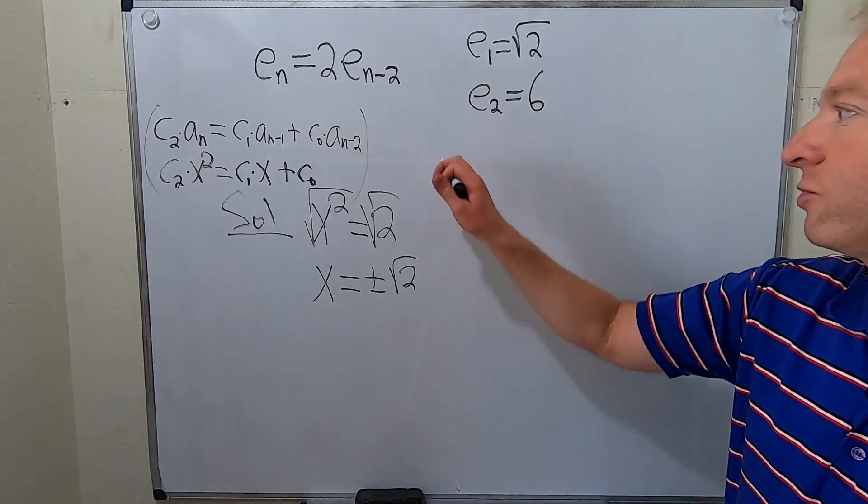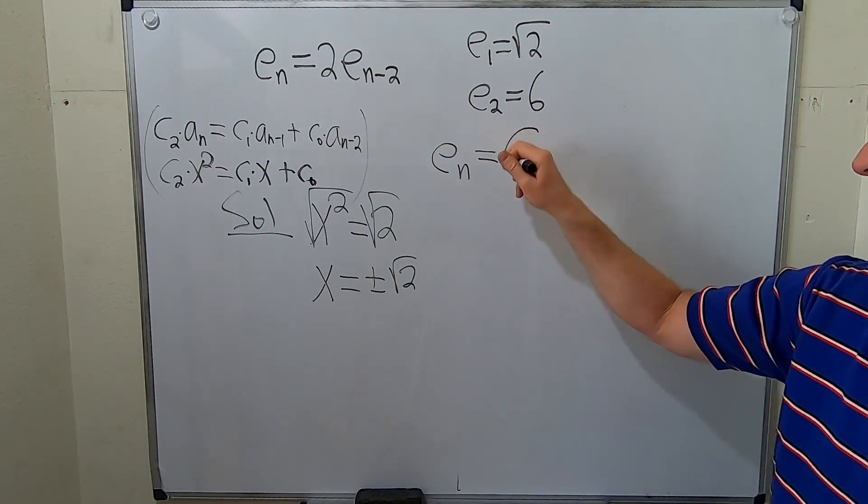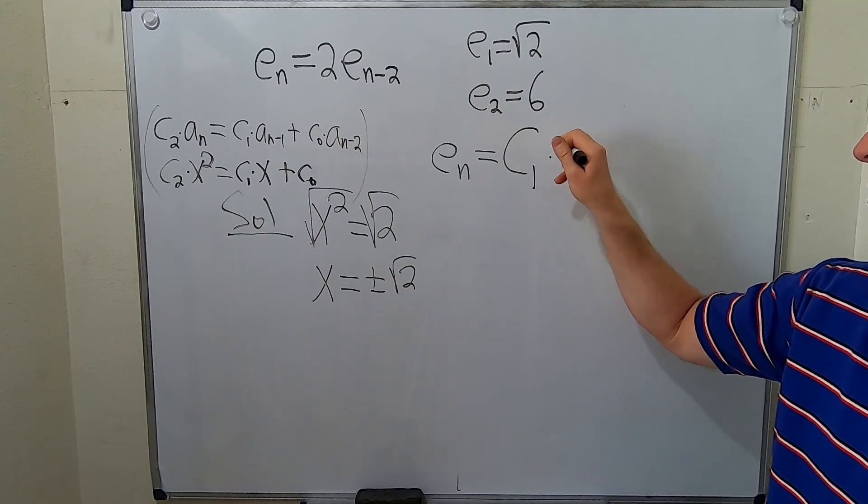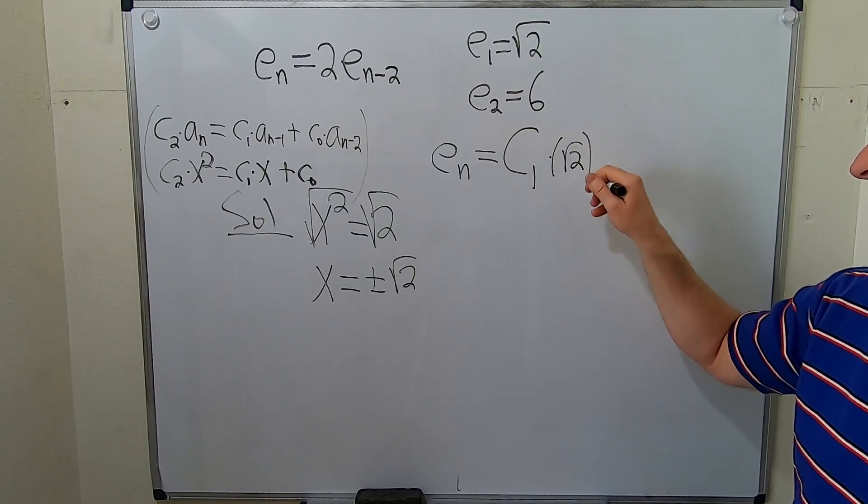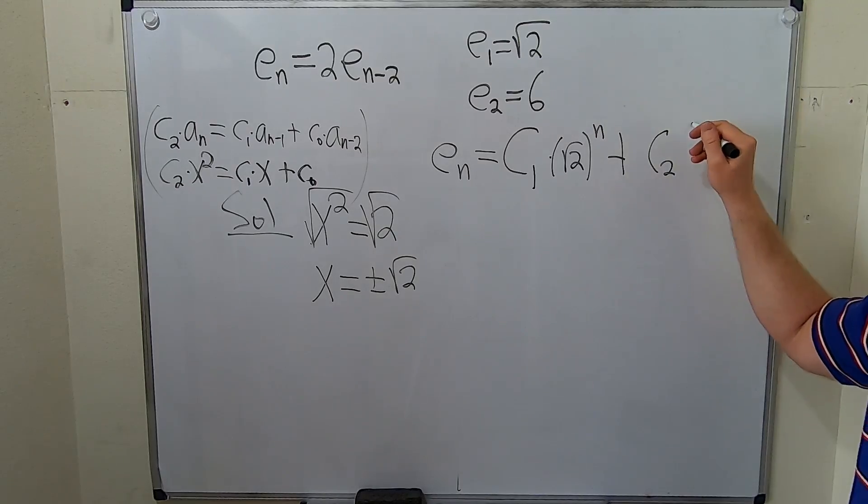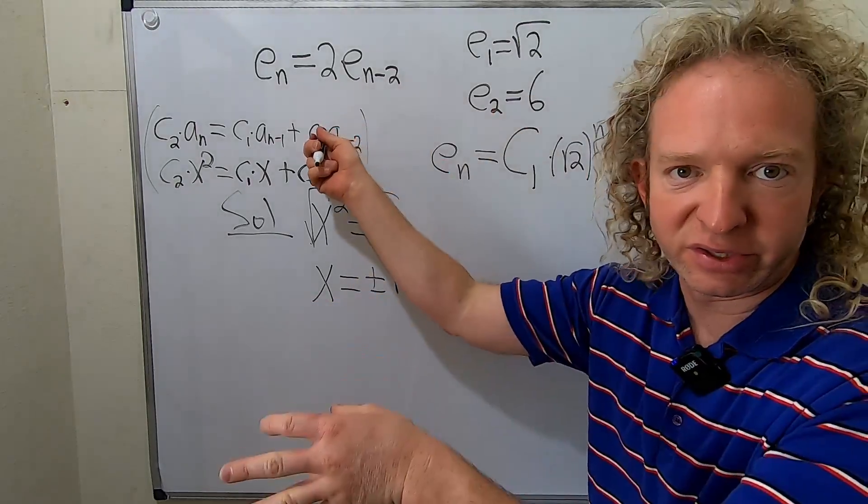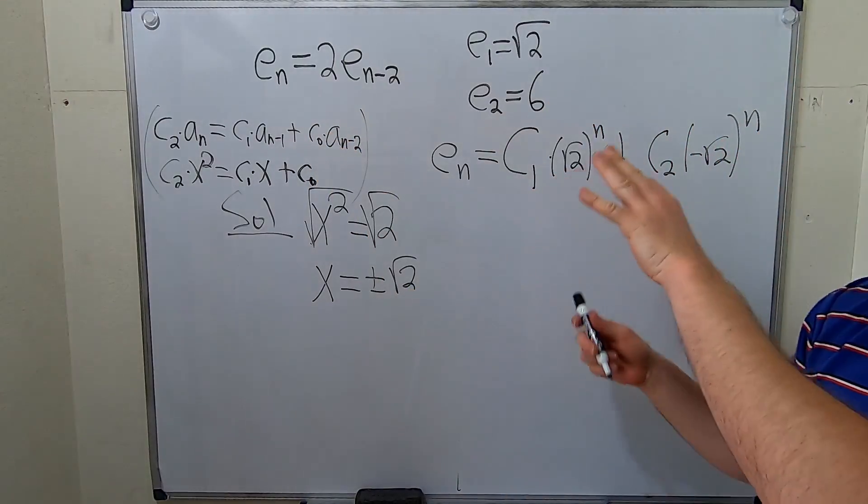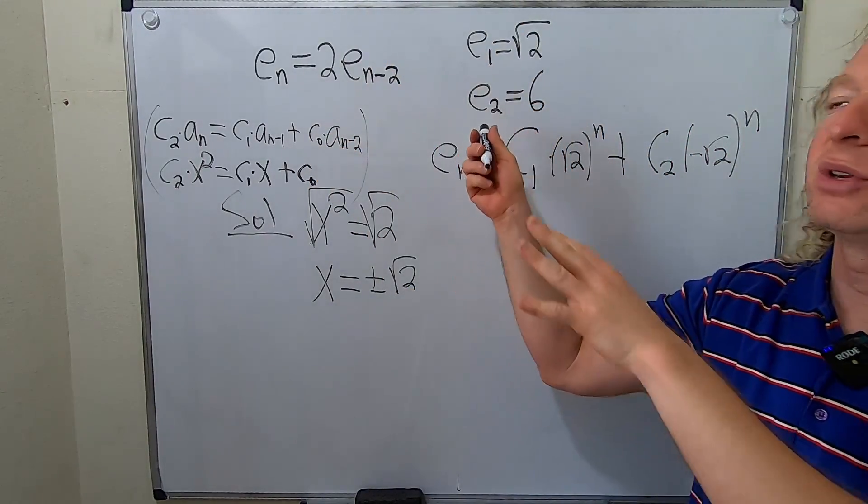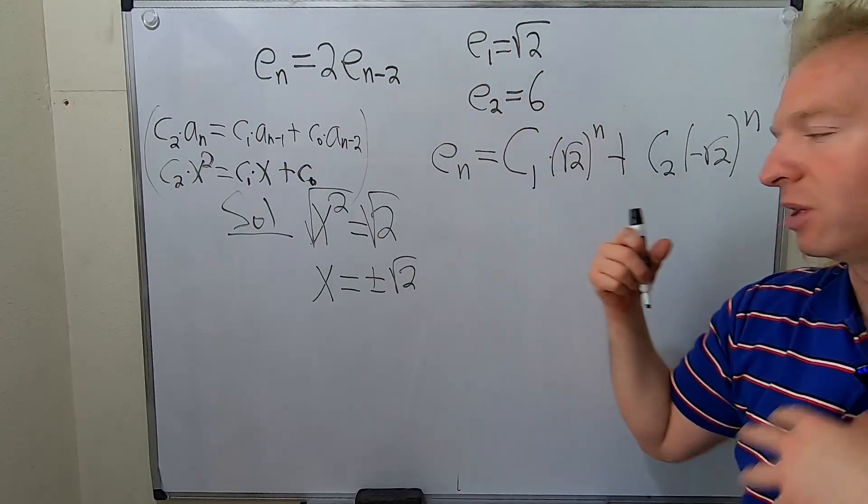Whenever that happens, the answer to the recurrence relation has the following form. e sub n equals big C1 times one of the roots to the nth power plus big C2 times the other root to the nth power. So this is the solution to this, right? So now we have to find the solution to everything. In other words, we have to find the solution when we add these initial conditions.